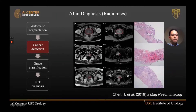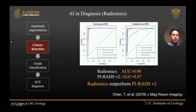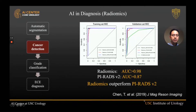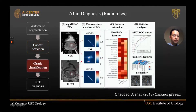For cancer detection using MR prostate images, AI-based radiomics yields a very strong area under the curve, the AUC, in predicting what the correct pathology is. This outperforms what trained radiologists using the PI-RADS classification system are able to do.